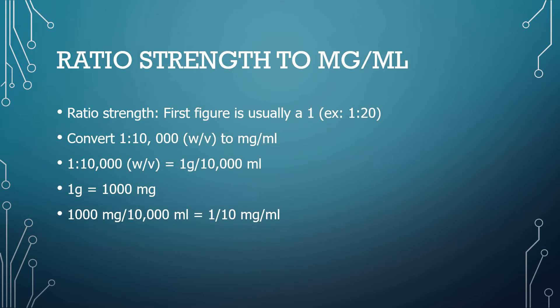Next, let's look at ratio strength and how to convert that to milligram per mL. Ratio strength is usually expressed as one to and then another number, so the first number is usually a one — for example, one to twenty. Let's look at this example: convert one to ten thousand weight in volume to milligram per mL.